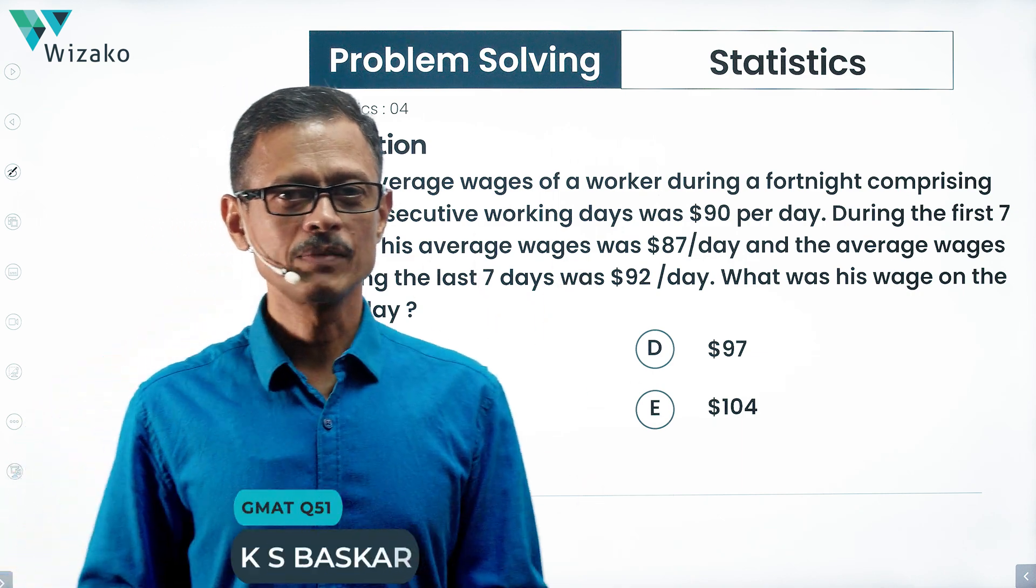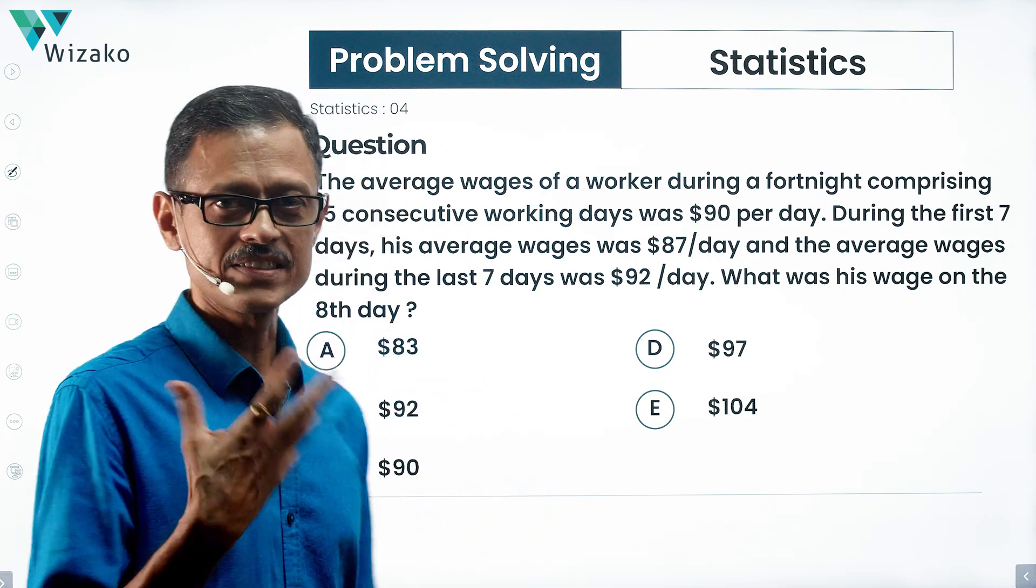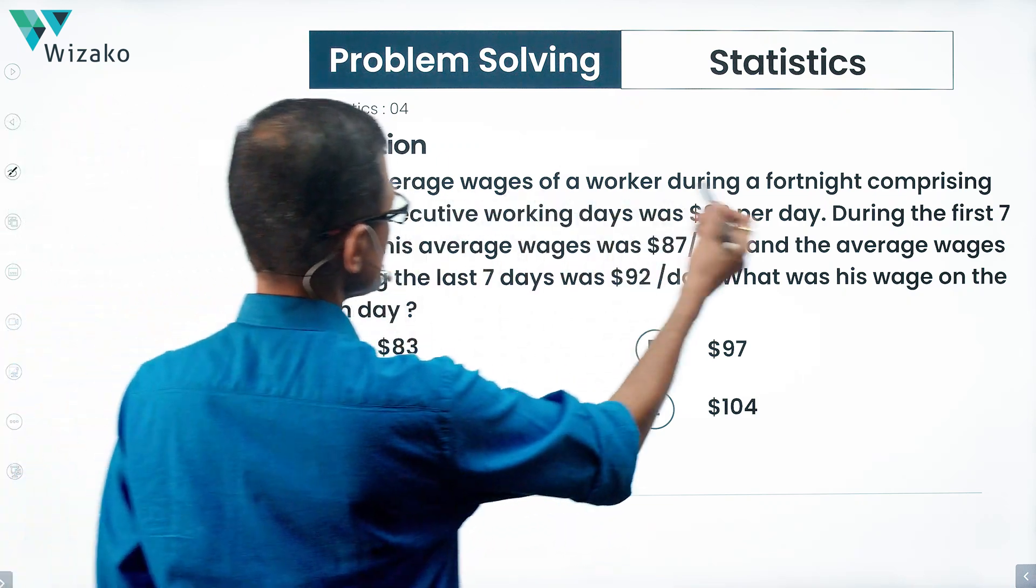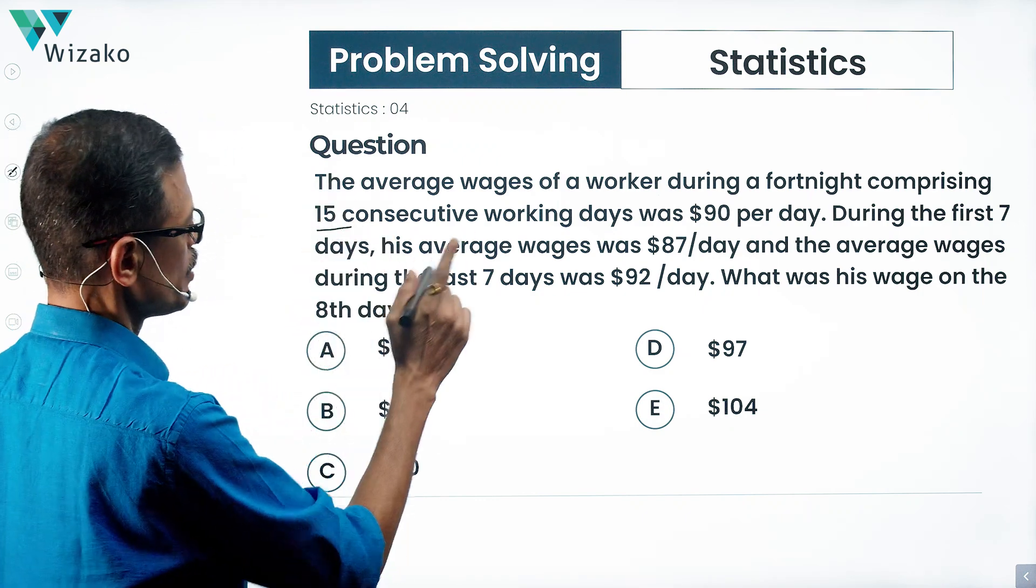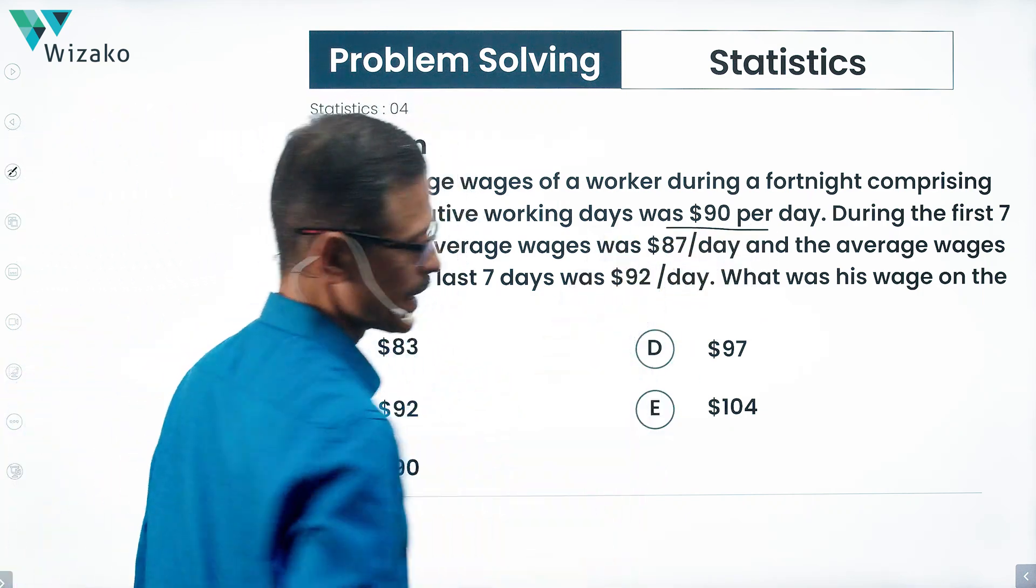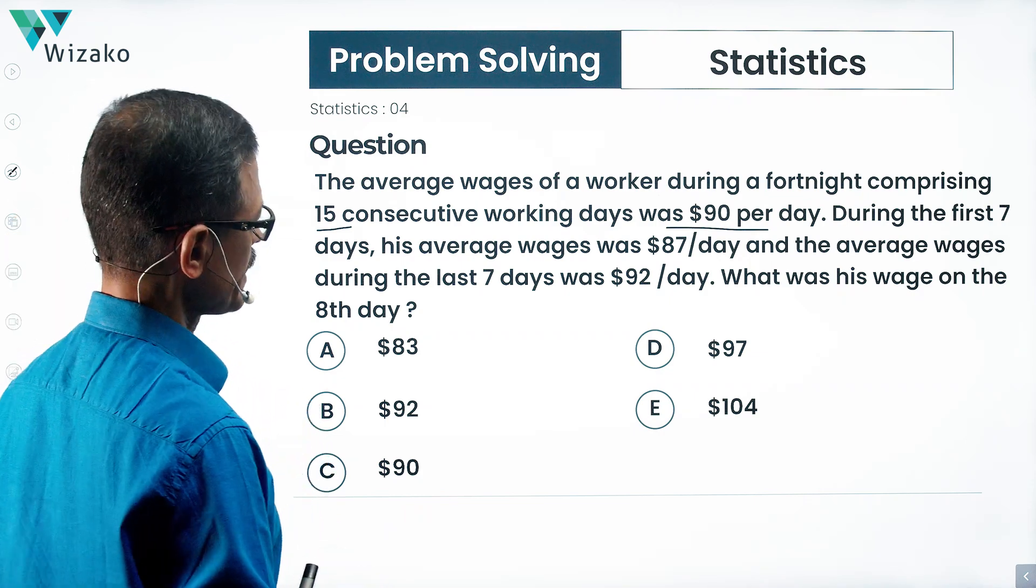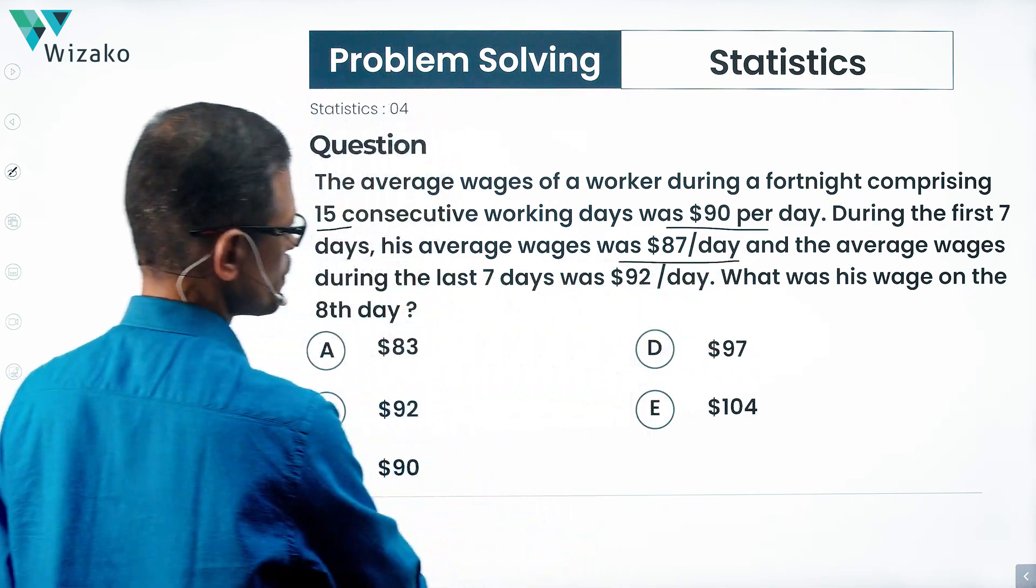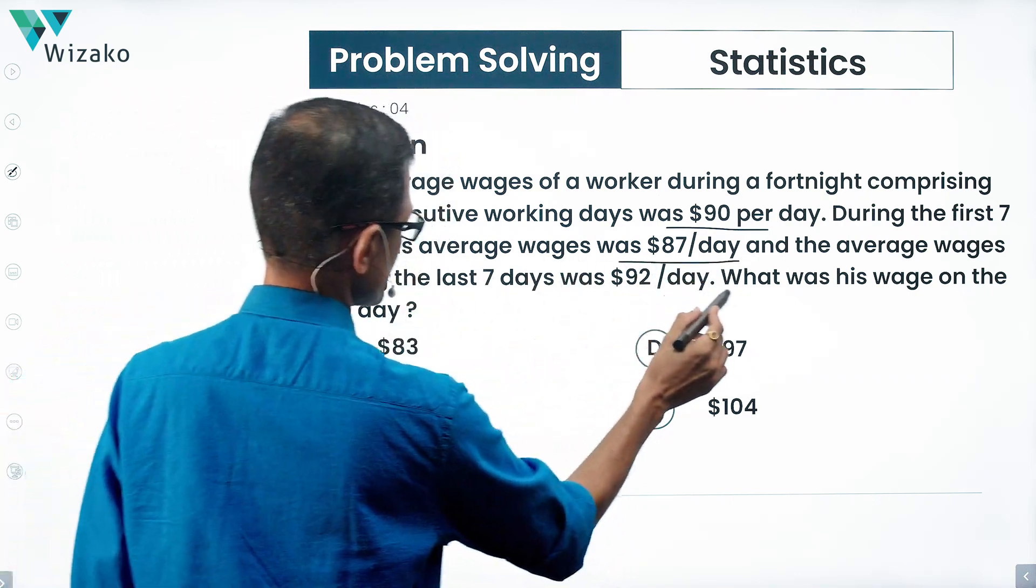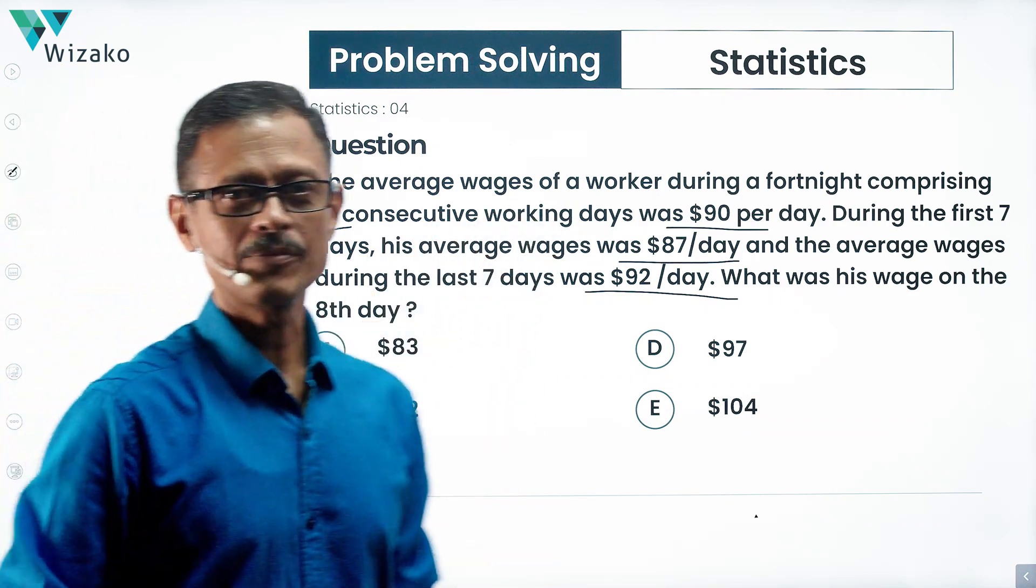This is an easy GMAT problem-solving practice question. It's a quantitative reasoning question from averages, a statistics question. The average wages of a worker during a fortnight comprising 15 consecutive working days was $90 per day. During the first seven days, his average was $87 per day. During the last seven days, his average was $92 per day. What was his wage on the eighth day?